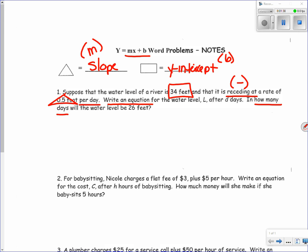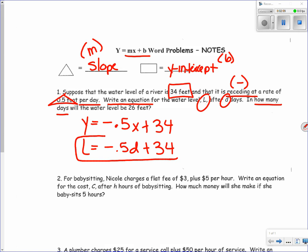I'm going to write it in y equals form first, then change it to the variables they want us to use. So y equals negative 0.5x plus 34. Now plugging in the variables they want, L and D for days, we get L equals negative 0.5D plus 34. That's your first part of the answer.